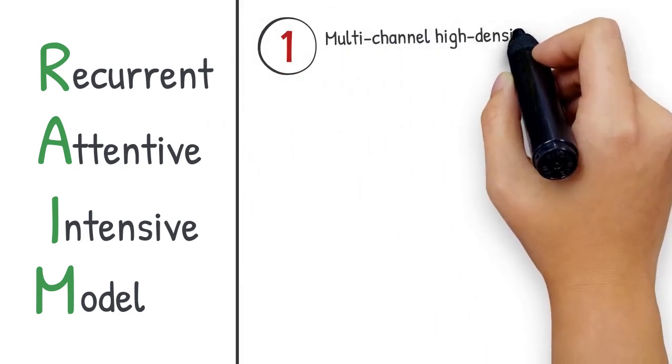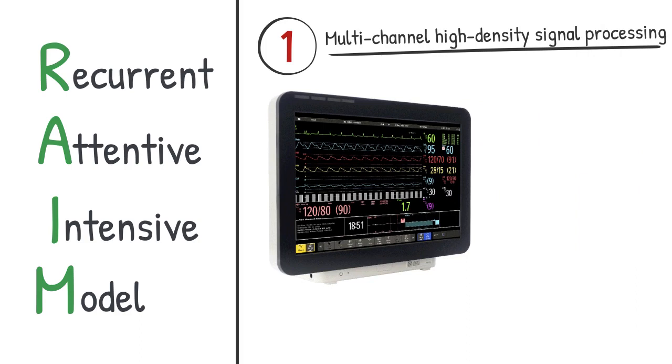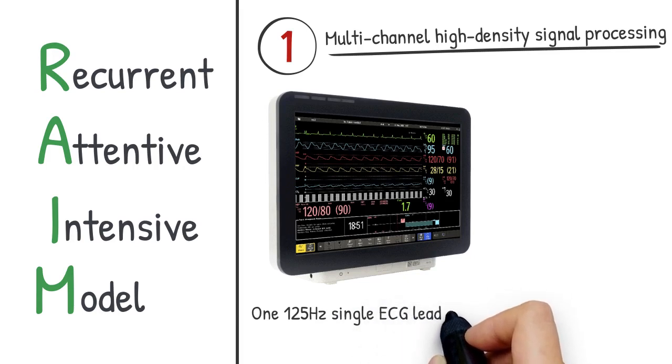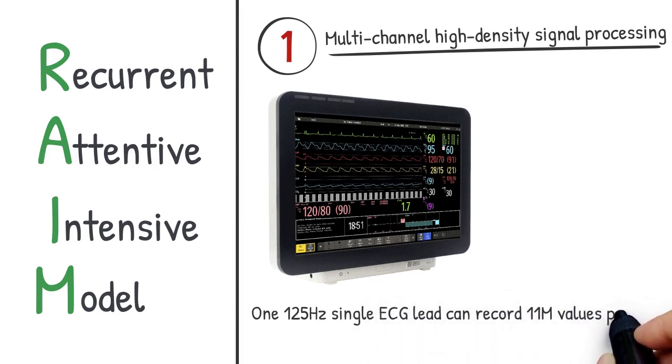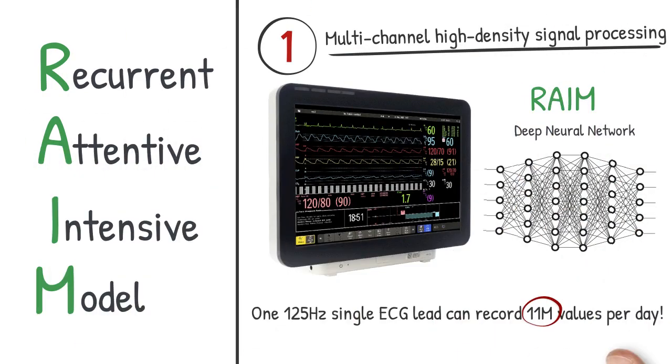First, multi-channel high-density signal processing. As noted before, the data is large-scale and contains high-density and multi-channel signals. For example, a 125 hertz single ECG can record 11 million values per day. Traditional signal processing methods or modern algorithms have difficulties in scaling up computationally. So in REM, we adapt deep neural networks for efficiently processing the multi-channel continuous signals.